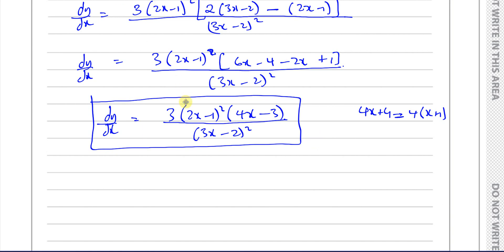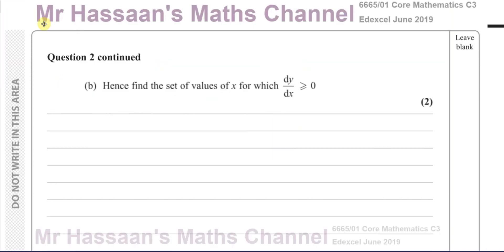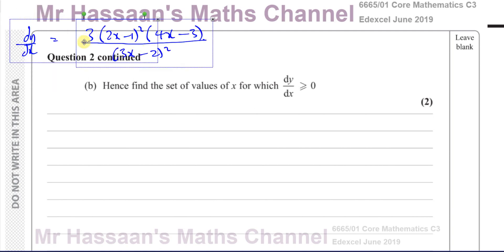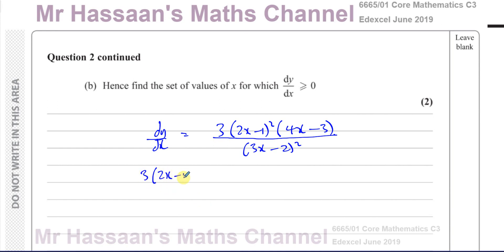For part B, we use this result to find the set of values of x for which dy/dx ≥ 0 — that is, where the gradient is positive or zero. So we need to solve the inequality: 3(2x − 1)²(4x − 3) over (3x − 2)² ≥ 0.